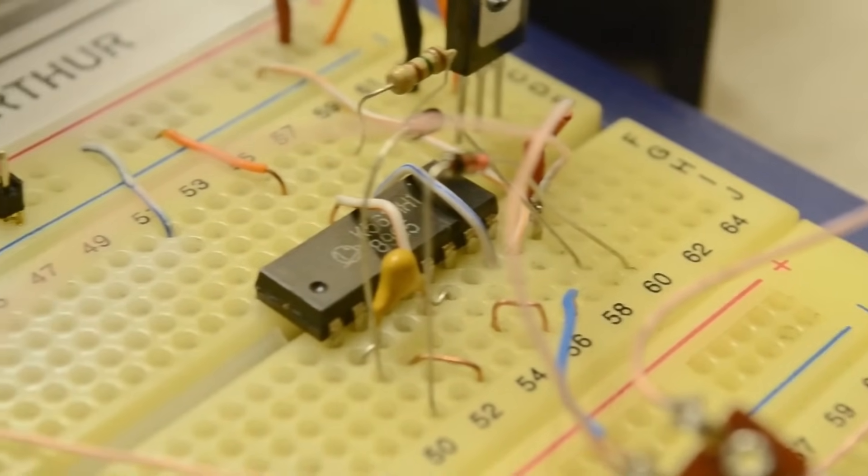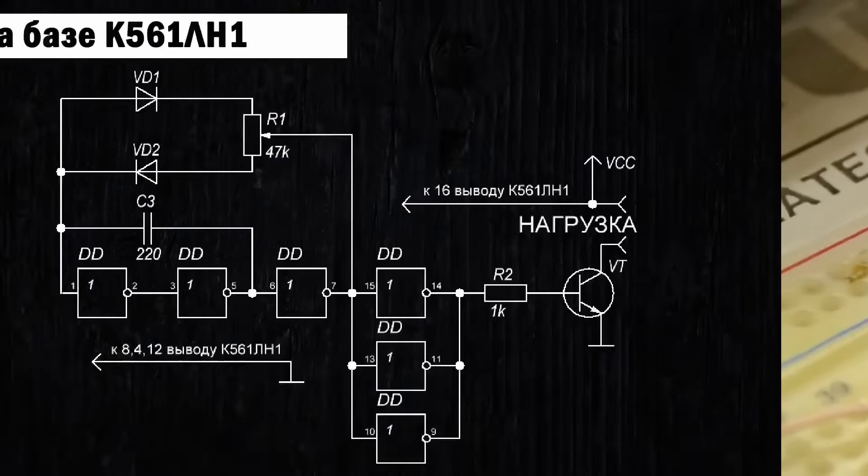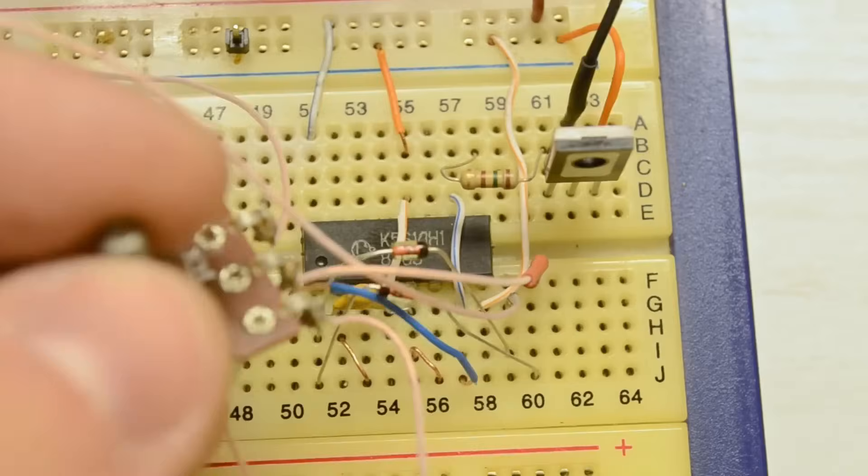And now we move on to the second circuit. This is also a simple circuit, built on logic elements. A generator is assembled on the basis of three elements, with a period approximately equal to RC.